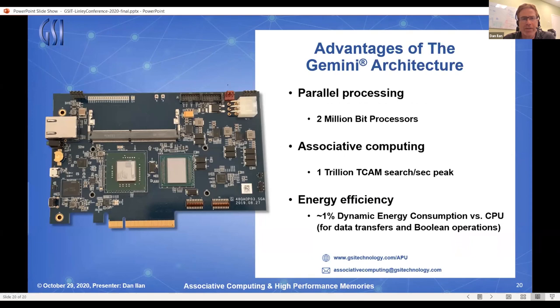To conclude, basically, I want to, again, mention the advantages of the architecture and match them with what we just said. So APU is a parallel processor with 2 million-bit processor. It's capable of associative computing, so it can do trillion TCAM operations per second. And it's energy efficient, which means dynamic energy is about 1% of what it takes in a CPU to do those data movement and logical operations on the data itself. And you're all invited to our breakout session, where we will show a demonstration of another application domain of the APU in search. Thank you.